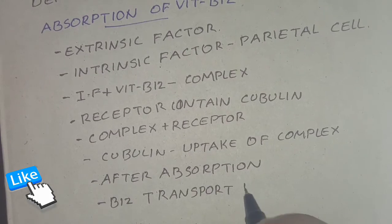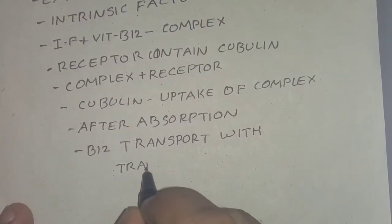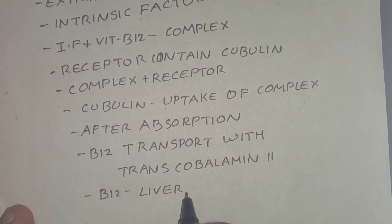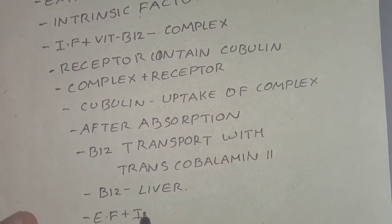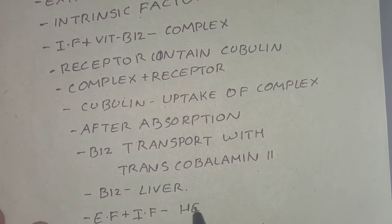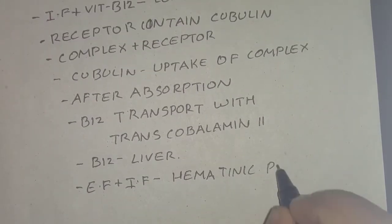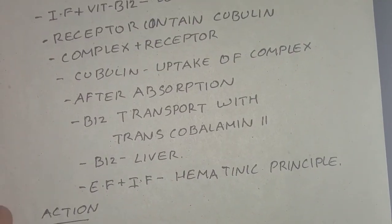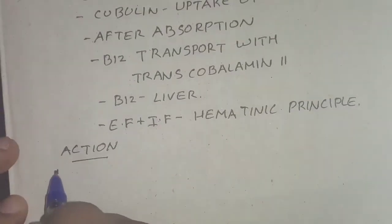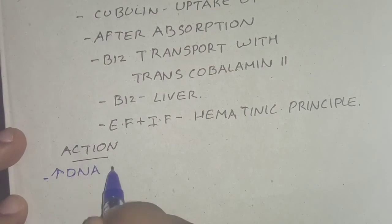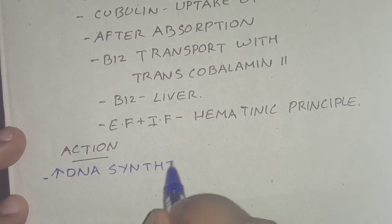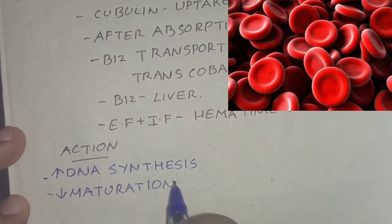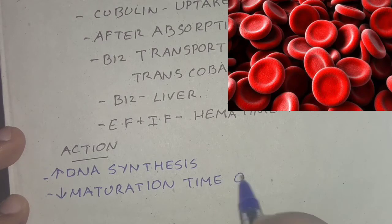After absorption, B12 is transported in combination with transcobalamin 2, and B12 is stored in the liver. The extrinsic factor and intrinsic factor together are called the hematinic principle. Regarding its actions, B12 increases DNA synthesis and decreases the maturation time of red blood cells.